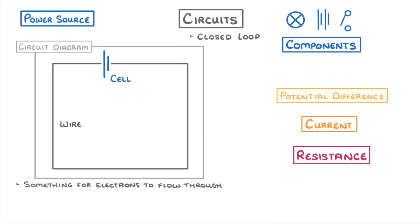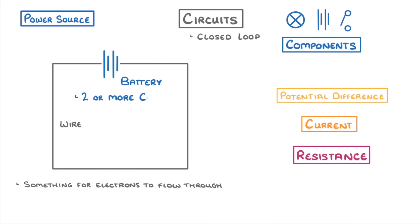We've already seen the symbol for a cell, which is basically just a simple version of a battery. As batteries are made up of two or more cells, their symbol is just two cell symbols put together. Although as far as exams are concerned, cells and batteries both act in the same way.